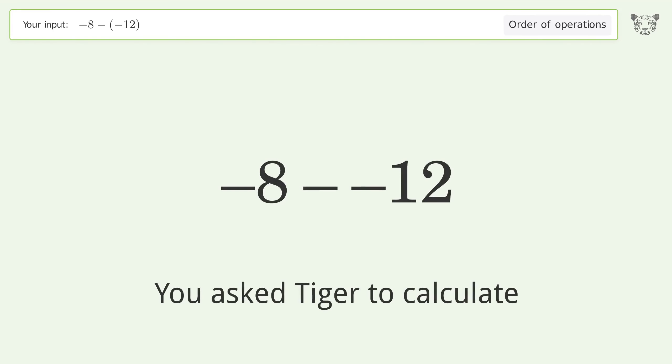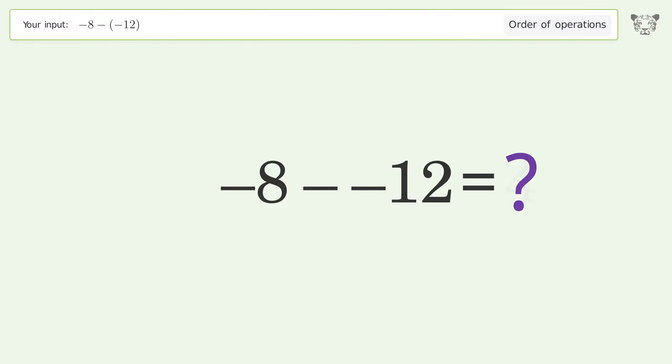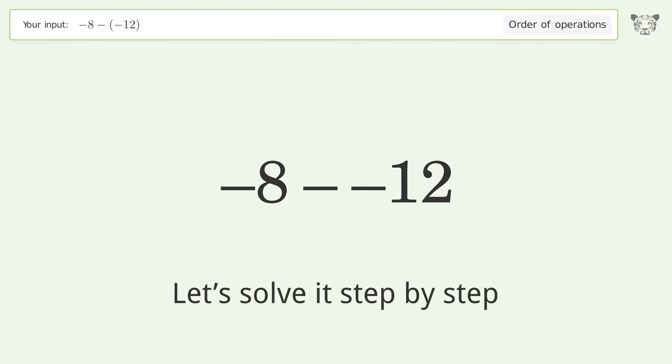You asked Tiger to calculate this. It deals with the order of operations — the final result is 4. Let's solve it step by step.